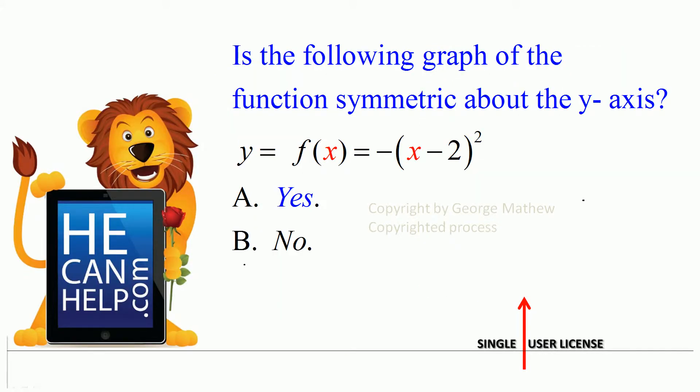Is the following graph of the function symmetric about the y-axis? y equals f(x) equals negative (x minus 2) squared. So what is the relationship between x and y? y equals negative (x minus 2) squared.